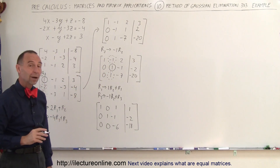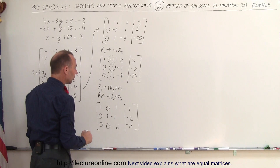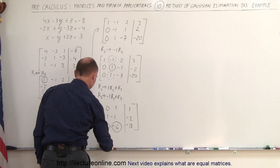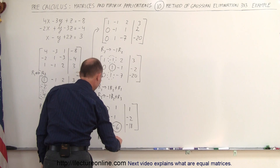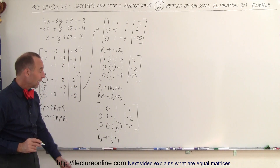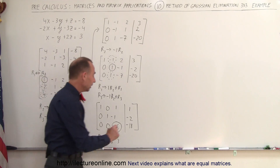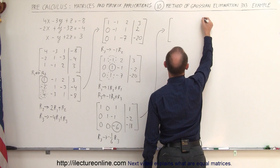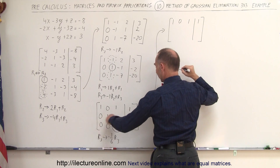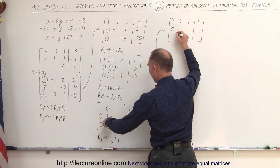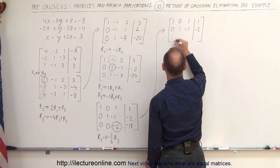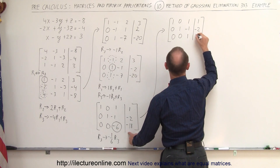Now we're done with the second column — we have a 1 in the middle and two zeros. We now want to make the third diagonal entry into a 1 by taking the third row and replacing it by dividing the whole row by negative 6, which is multiplying by negative one-sixth. Row 1 stays: 1, 0, 1, 1. Row 2 stays: 0, 1, negative 1, negative 2. Row 3 becomes: 0, 0, positive 1, positive 3.